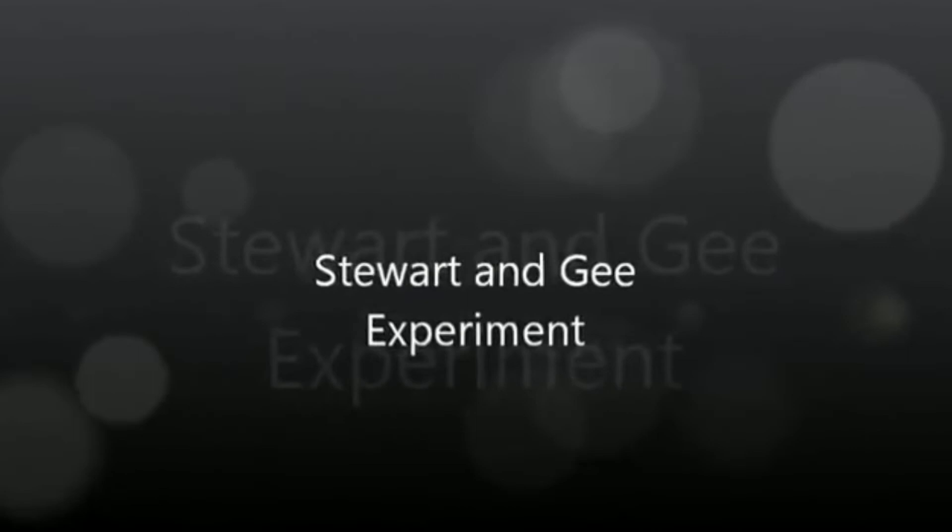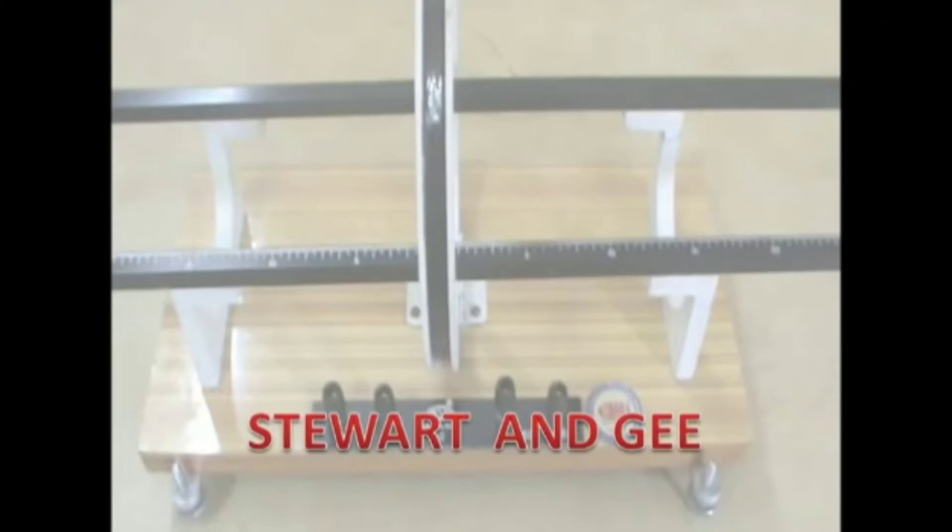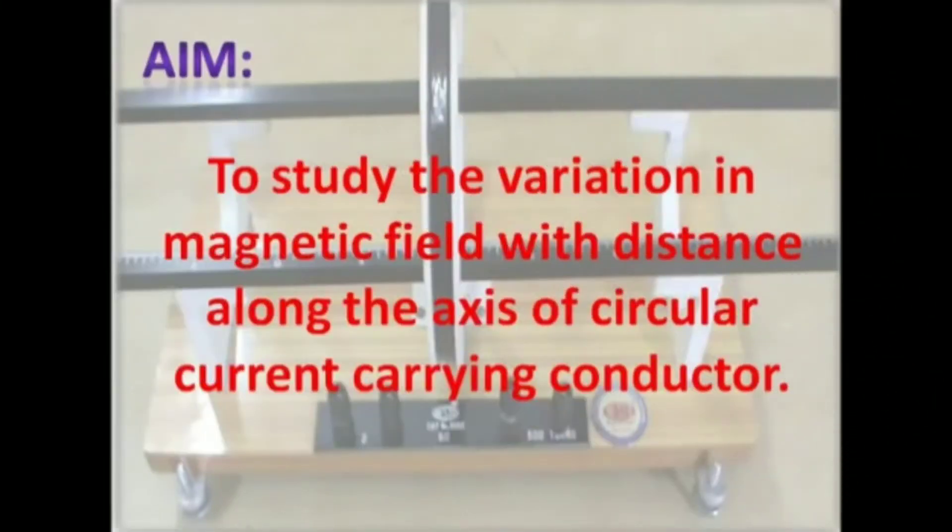In our today's class we are going to explain the Stewart and Gee experiment. The aim of the experiment is to study the variation of magnetic field with distance along the axis of a circular current-carrying conductor.